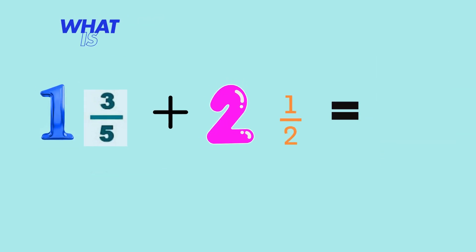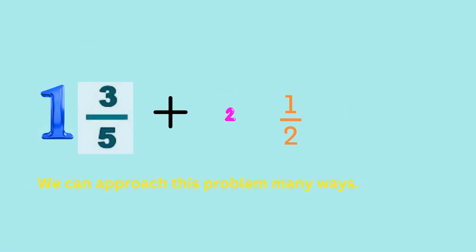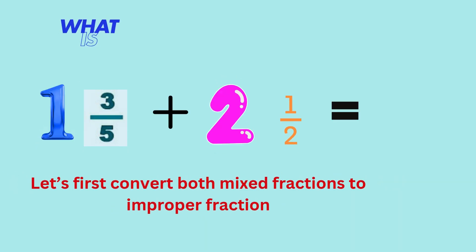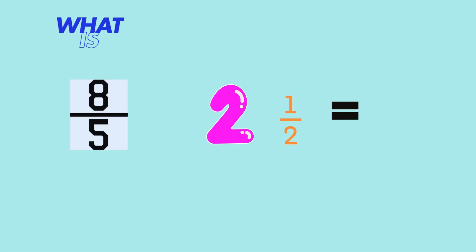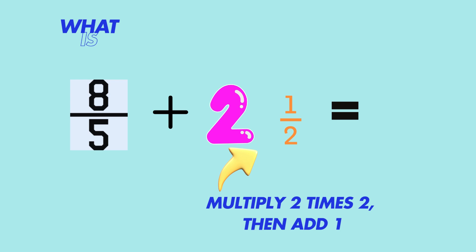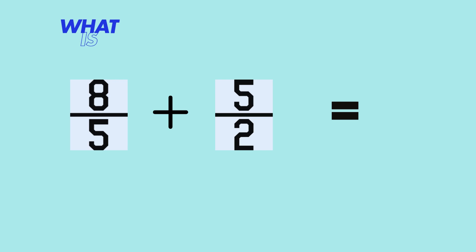Now let's try to calculate one and three-fifths plus two and one-half. First, we can convert both of these mixed fractions to improper fractions. To convert one and three-fifths, we multiply the whole number by the denominator to get five, then add the numerator of three to get eight. So, the mixed fraction one and three-fifths converted to its improper form is eight-fifths. To convert two and one-half, we multiply the whole number two by the denominator two to get four, then add the numerator of one to get five. So, the mixed fraction two and one-half converted to its improper form is five-halves.